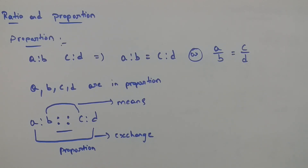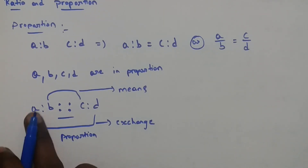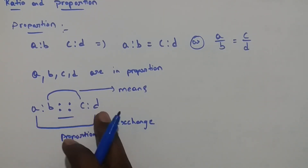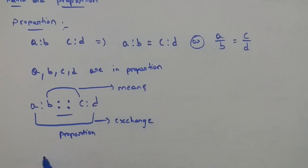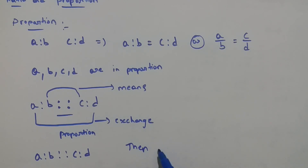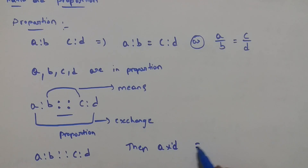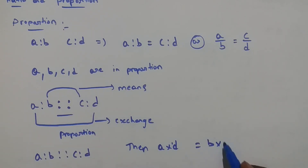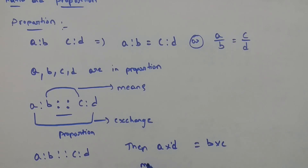In proportion A:B::C:D, we can write it as: product of extremes is equal to product of means. That is, A into D is equal to B into C.